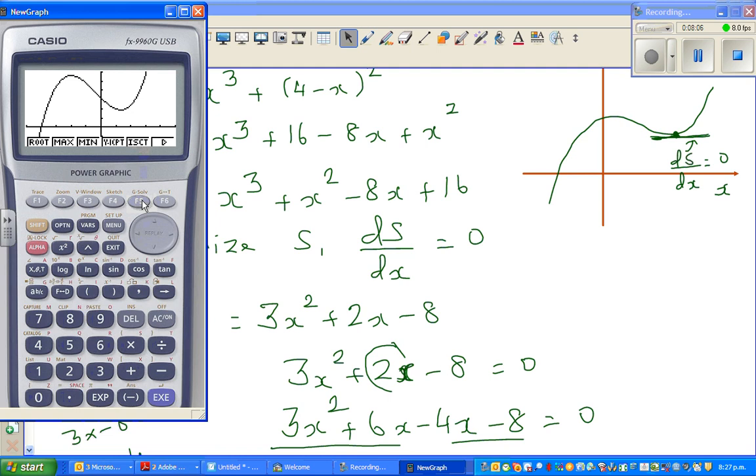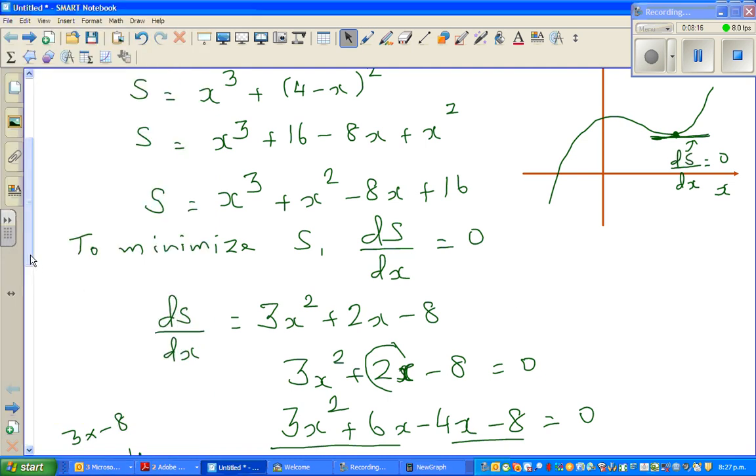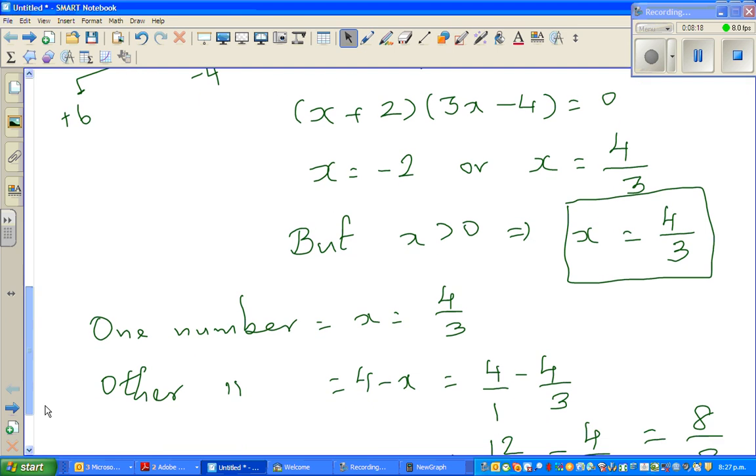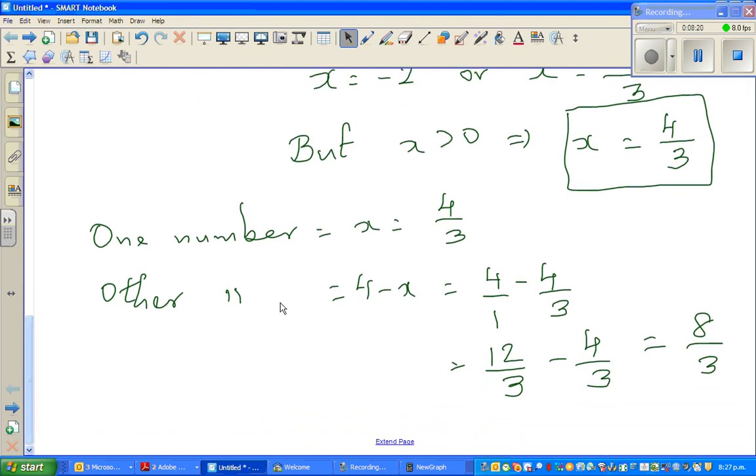So you go to G-Solve and then you press minimum. Here, 1.333, which is 4/3. So that's your answer. This is how you can differentiate. So one number is 4/3 and the other number is 8/3. See you in the next video.